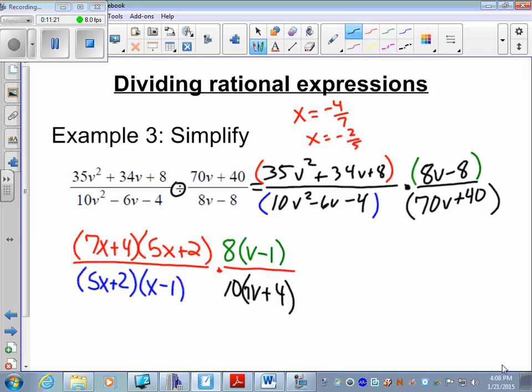I factored everything, now I look at what I can cancel top and bottom. We have 7v plus 4 divided by 7v plus 4, v minus 1 divided by v minus 1, 5x plus 2 divided by 5x plus 2. I have an 8 on the numerator, 10 on the denominator. 8 tenths left can be reduced. Divide top and bottom by 2, that's 4 fifths. Your answer is 4 fifths.